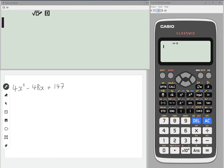Let's say I wanted to write 4x² - 48x + 147 in completed square form. Now your calculator can help you do this.